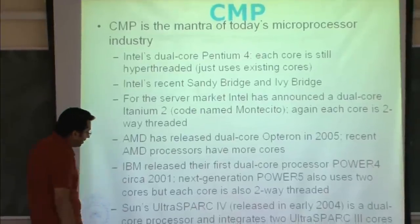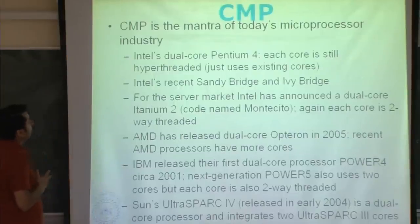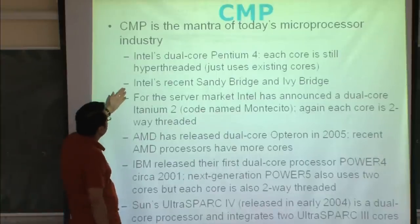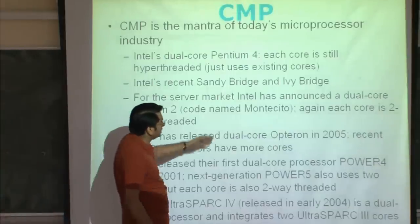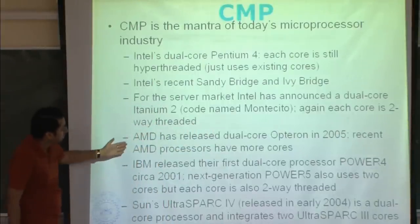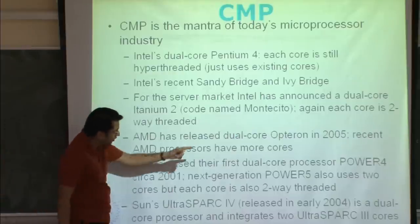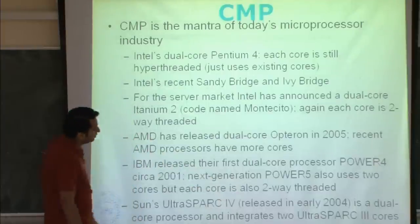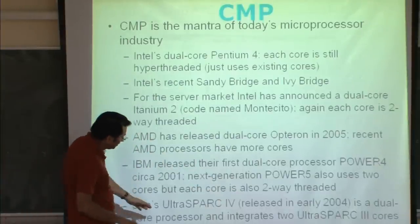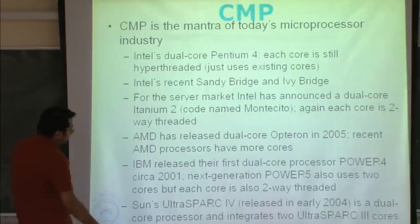Here is a list of things that happened in industry. Intel's dual-core Pentium IV, where each core was hyper-threaded — so you have multi-threaded cores. Intel's recent Sandy Bridge and Ivy Bridge have more cores on chip. For the server market, Intel announced dual-core Itanium II, codenamed Montecito, where each core is two-way threaded. AMD released dual-core Opteron in 2005, and recent AMD processors have more cores. IBM released their first dual-core processor, Power 4, in 2001. Power 5 also uses two cores but each core is two-way threaded. Sun's UltraSparc IV, released in early 2004, is a dual-core processor integrating two UltraSparc III cores. Pretty much every chip manufacturer has gone this way.